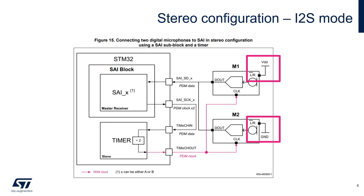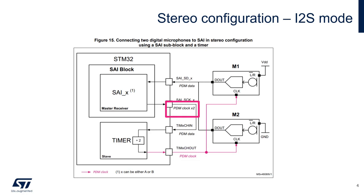Given a target frequency for the microphones equal to PDM clock, the SAI block will work at twice that frequency. The clock signal is then given as input to an STM32 timer which divides it by two to deliver the target PDM clock to the microphones. In this way, the SAI peripheral working at PDM clock times two will be able to read both the right microphone data on the rising edge and the left microphone data on the falling edge.